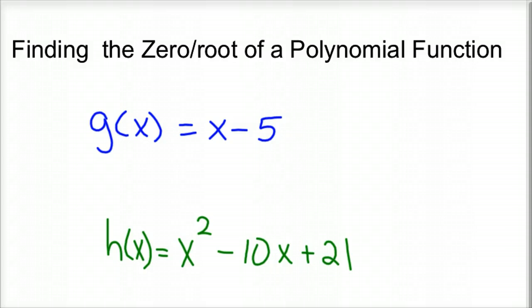This first one's pretty easy. If we plug a 5 in there for x, that would be zero. So g(5), for instance, would be 5 - 5. So g(5) is zero. 5 is the zero of that function g(x). So the zero is 5.